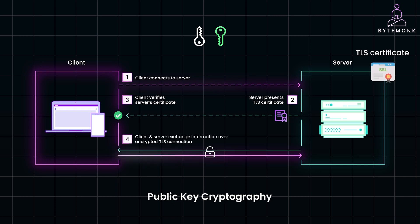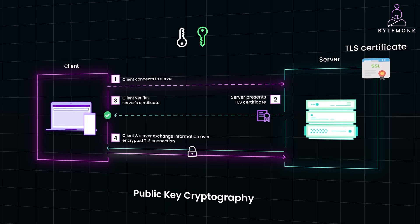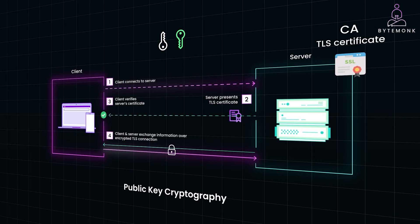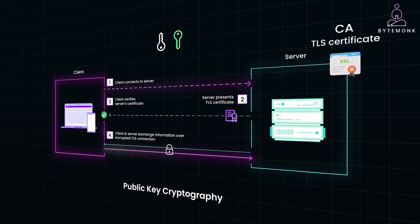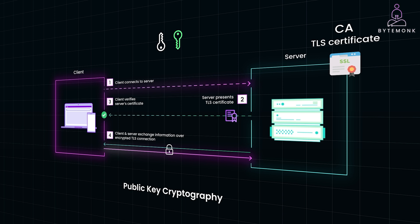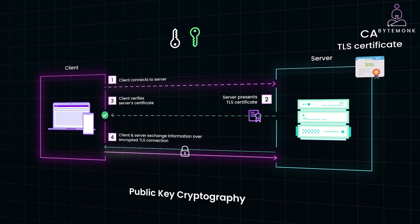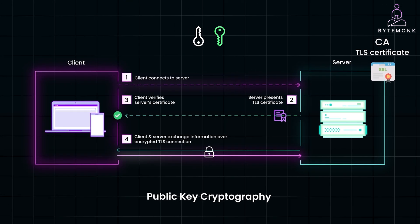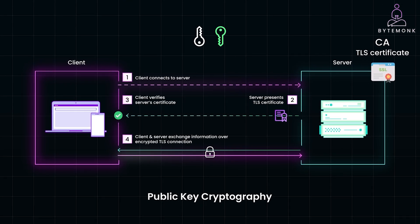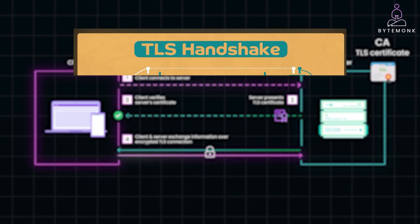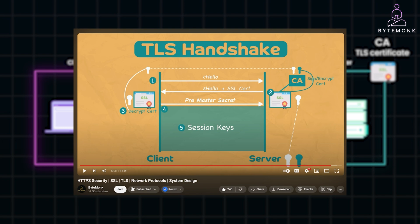An important thing to note is that the server's certificate is issued by a certificate authority, or CA, vouching for the server's identity. If an attacker tries to pose as the server, they won't have the legitimate private key or a valid certificate, and the client will detect this. For a deeper dive into how this process works, check out my video on HTTPS.